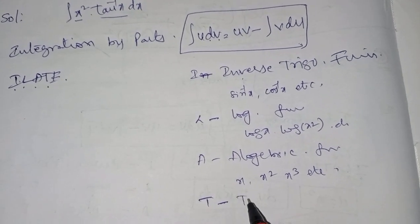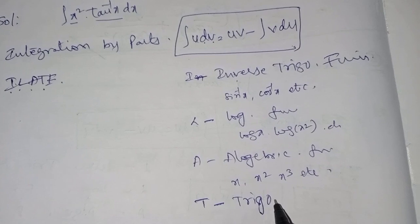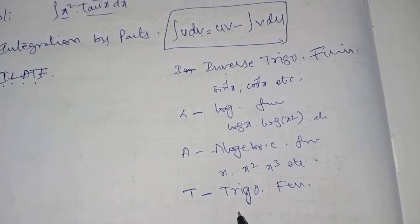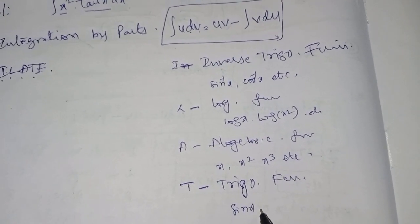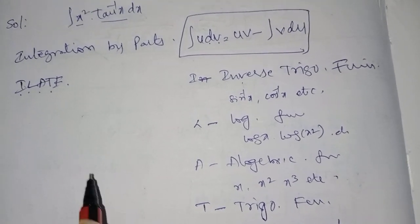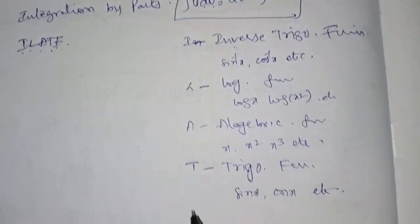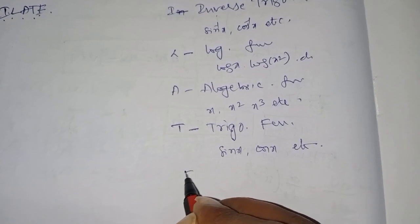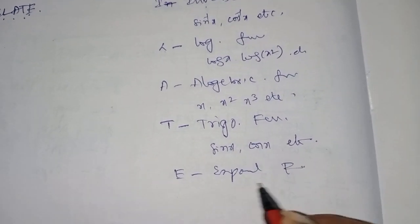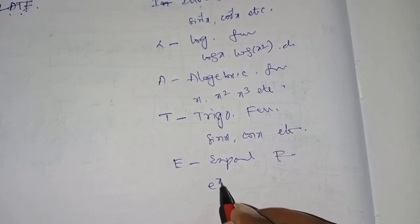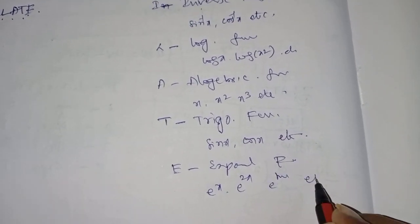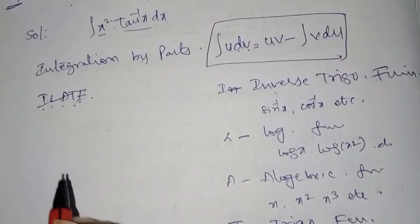The next letter T stands for trigonometric functions — we know that trigonometric functions are sin x, cos x, etc. The next letter E means exponential functions — we know that e^x, e^(2x), e^(sin x), etc.